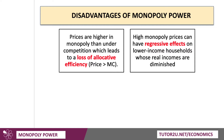Linked with that is a second point: high monopoly prices can have a regressive effect on relatively low-income households. If households spend a high percentage of their income but have a low income, and they're having to pay high prices for utilities, food and drink, their real purchasing power gets hit. Monopoly may have a disproportionate effect on families with low incomes and low savings.